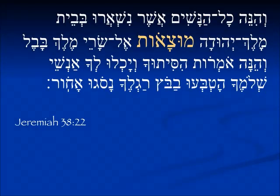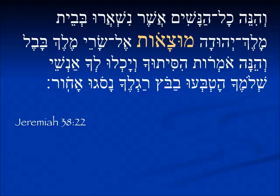Finally, in a feminine plural form in Jeremiah 38, speaking of kol hanashim — all the women which are left in the house of the king of Judah — mutsa'ot, they are being brought out to the princes of the king of Bavel. I hope this is somewhat helpful for you to get a handle on these different forms. Next time, we'll go on to a different binyan. In the meantime, keep your eye on the sky — your redemption draweth nigh. Shalom.